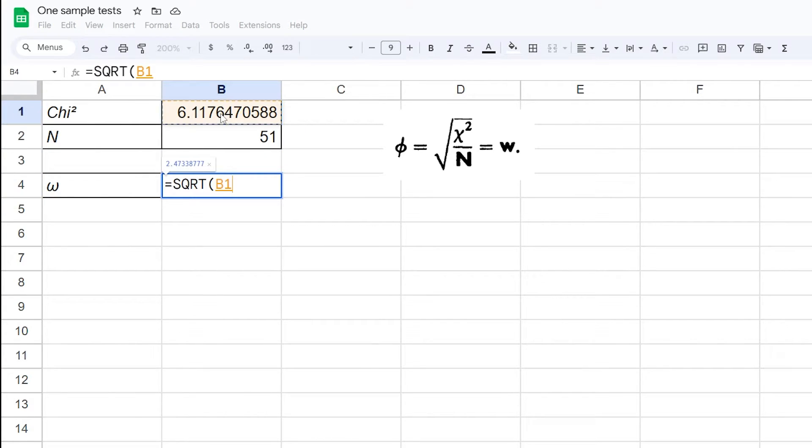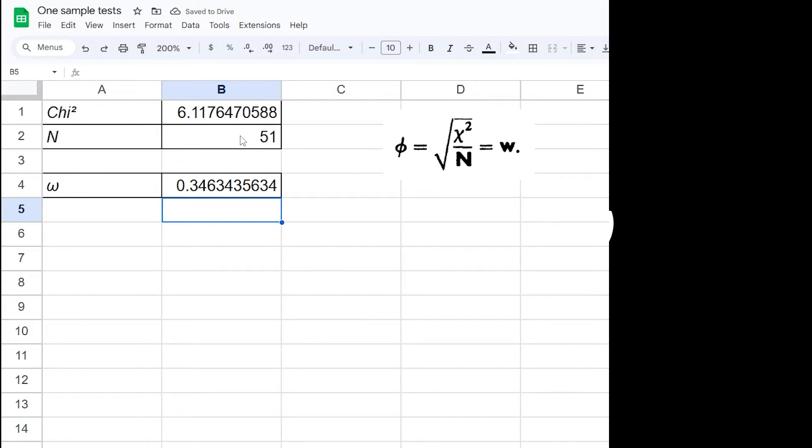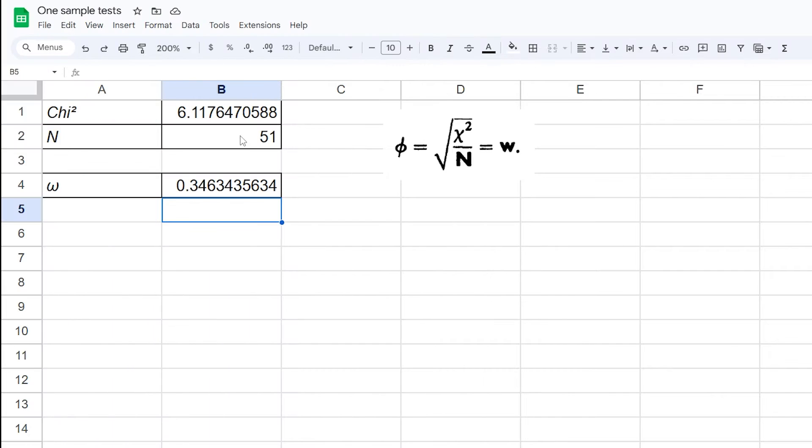The resulting effect size for my example is Omega equals 0.346 rounded to 3 decimals. Finally you need to classify the magnitude of this effect.